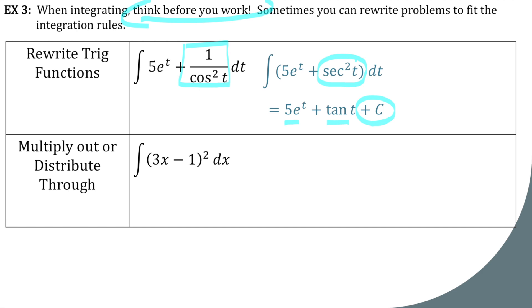Sometimes you might have to multiply out or distribute through before you can integrate. So then you just take the antiderivative of 9x squared, then the antiderivative of negative 6x, then the antiderivative of 1, and add your plus c.